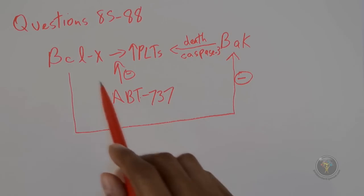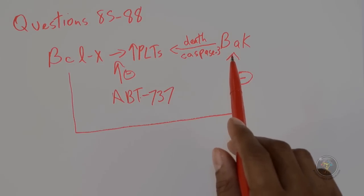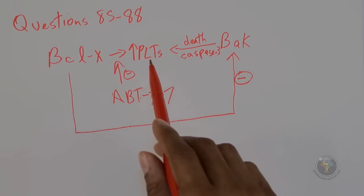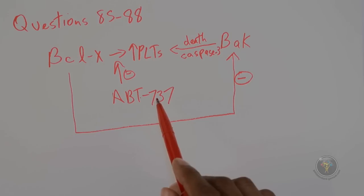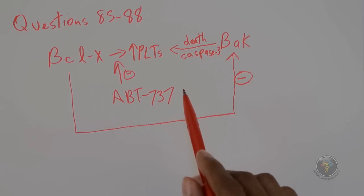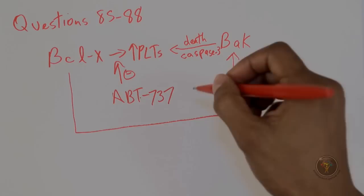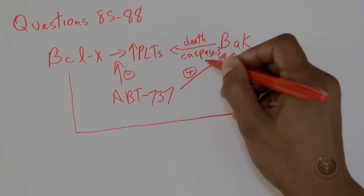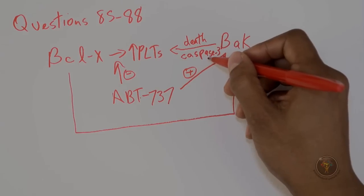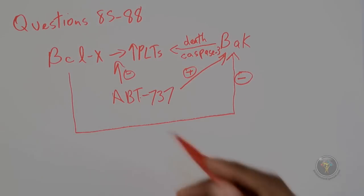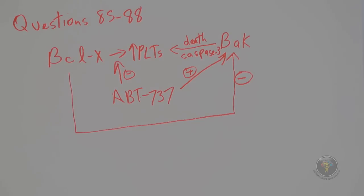Administration of ABT-737 in the presence of BAK leads to increased activation of caspase-3 and therefore cell death. In the absence of BAK, ABT-737 does not cause this. So ABT-737 has a positive effect on BAK — it acts through BAK, not directly on caspase-3.